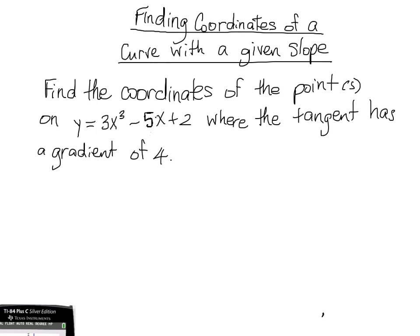In this video, we'll be looking at how to find the coordinates on a curve if you're given the gradient at that point. So in this case, we're given the gradient, or the slope, it's 4. So we know that at a certain point, or perhaps points, the slope of this curve is 4, and we want to find out where that is.